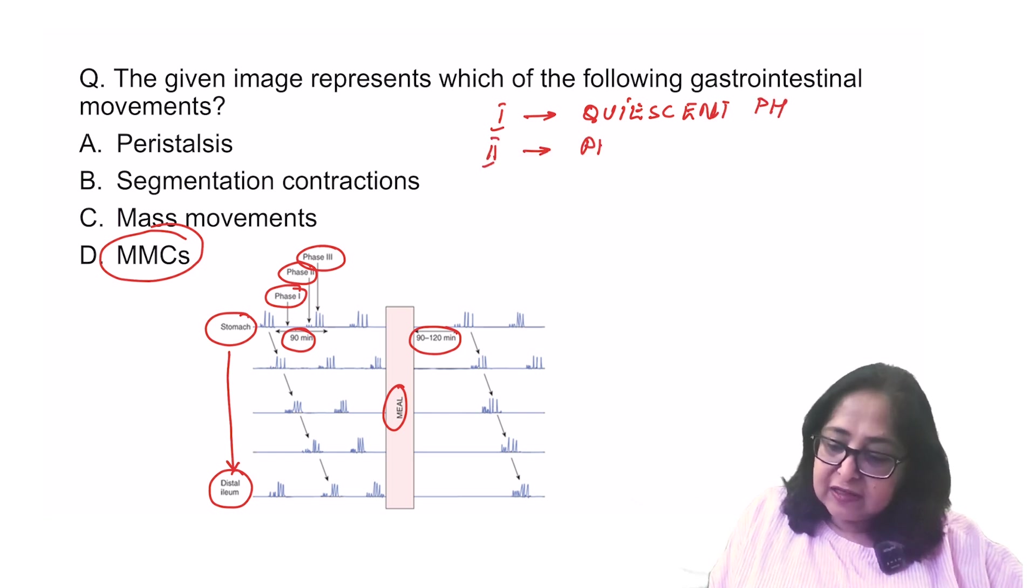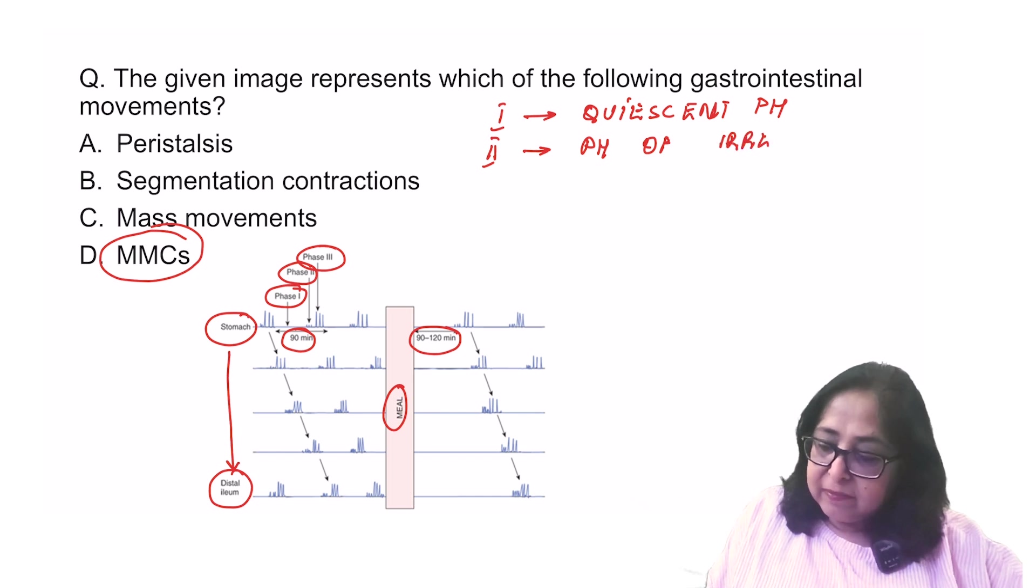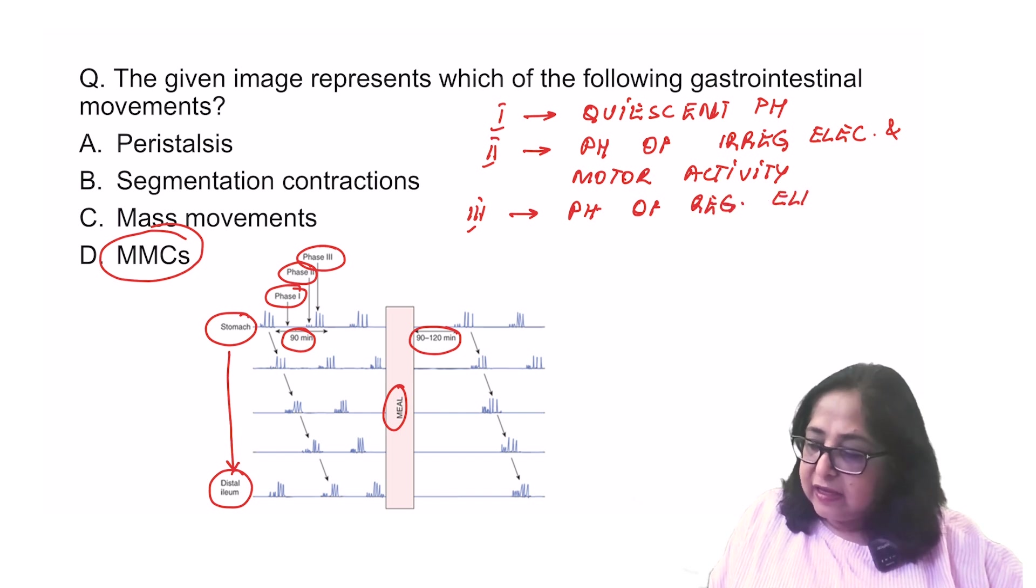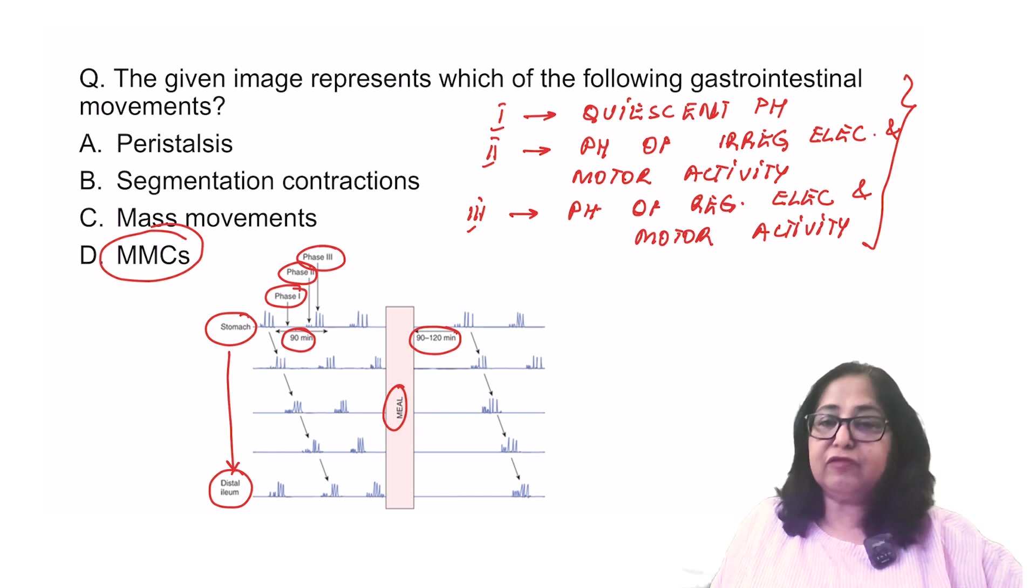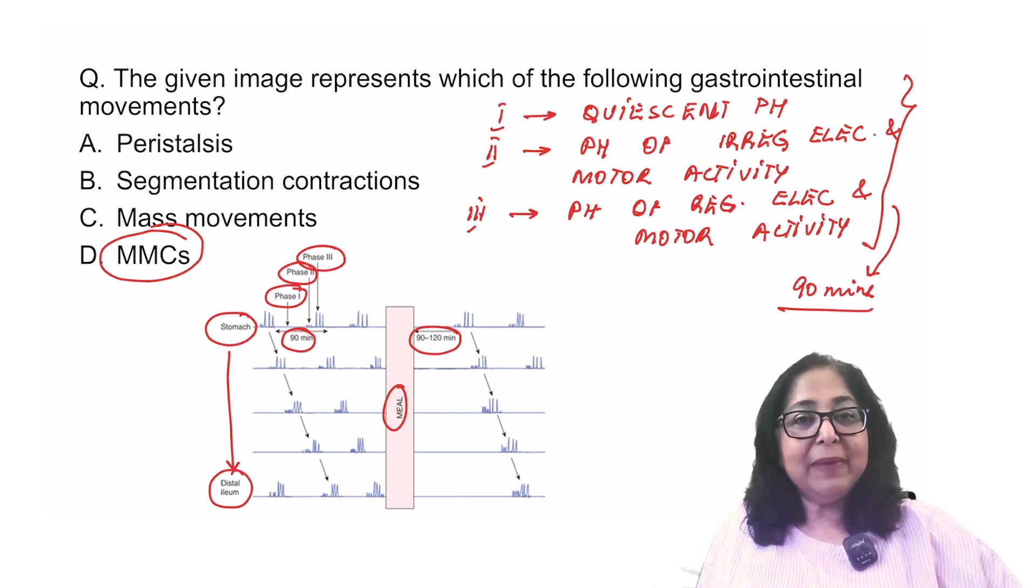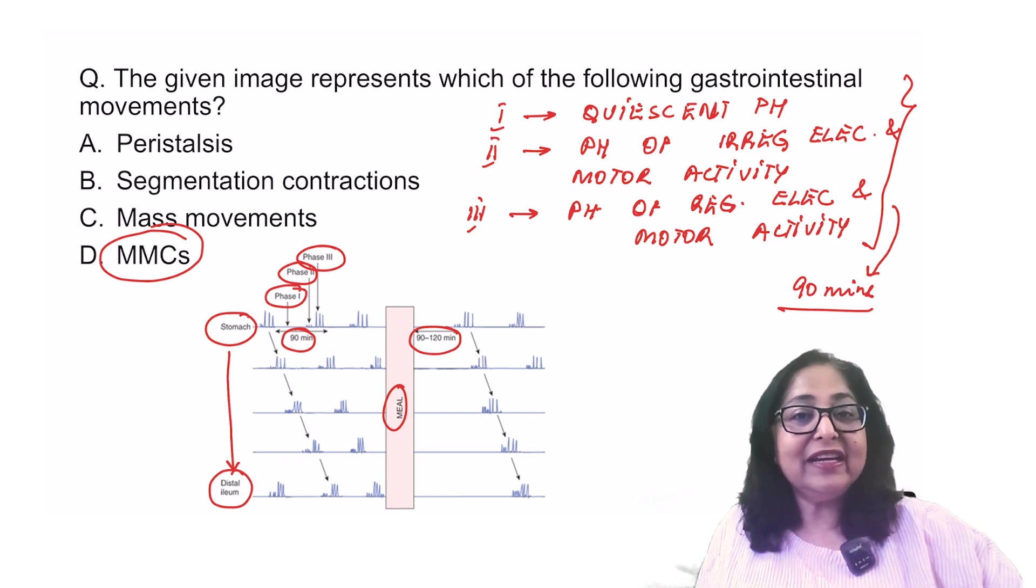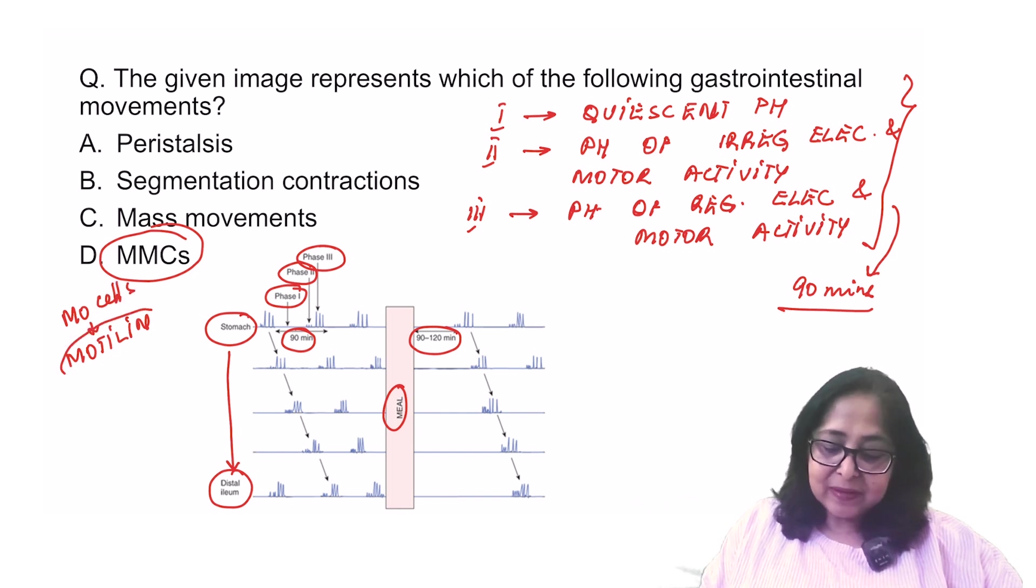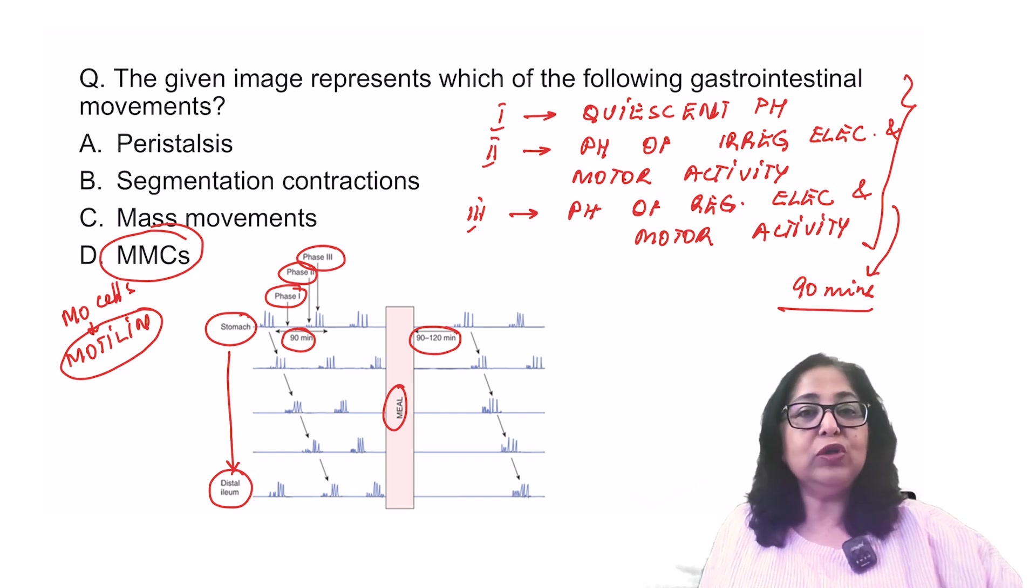Phase 2 is the phase of regular electrical and motor activity. And what is phase 3? Phase 3 is the phase of regular electrical and motor activity. And very important to understand that these three phases together take about 90 minutes for completion. Another very important point about the migrating motor complexes is that this is not a neural activity. It is a hormonal activity. This is produced by a hormone which is known as motilin. This is secreted by the MO cells. Motilin is responsible for the migrating motor complexes.